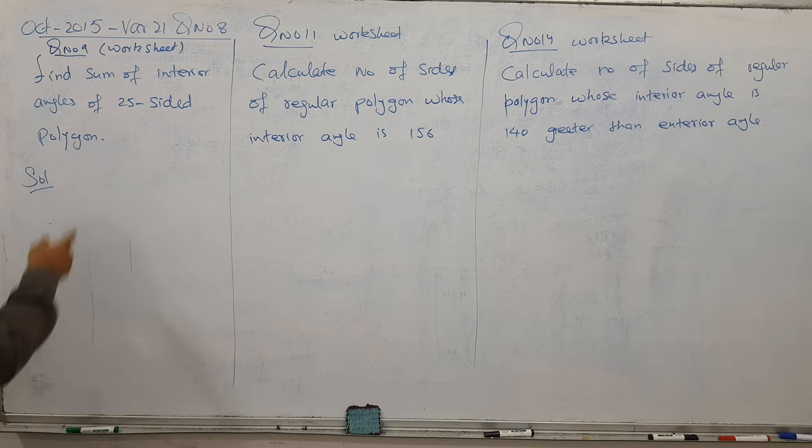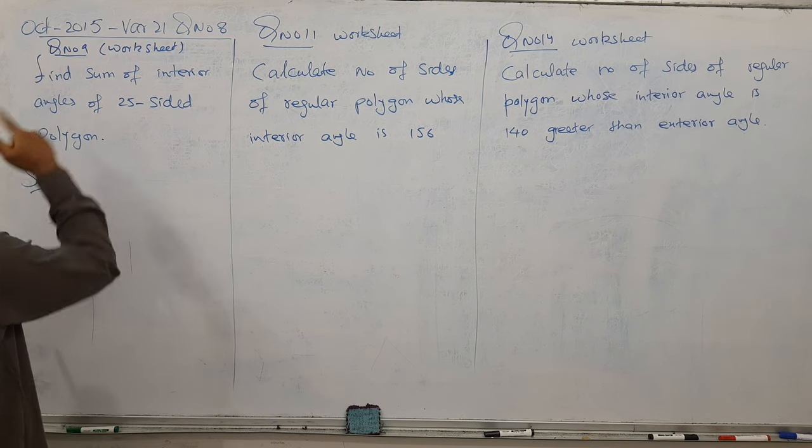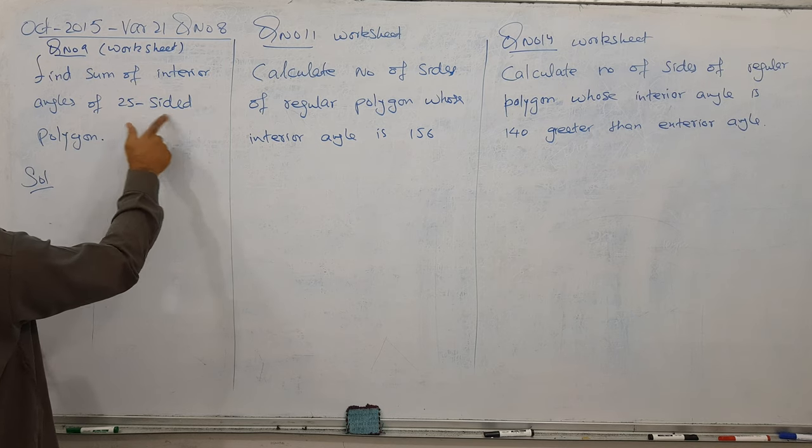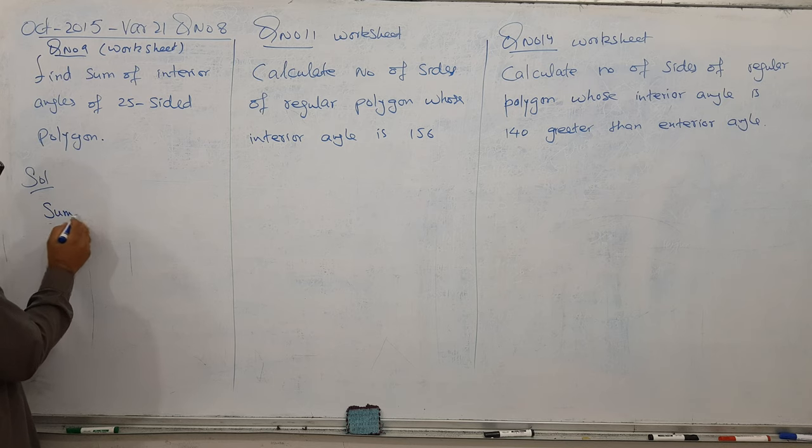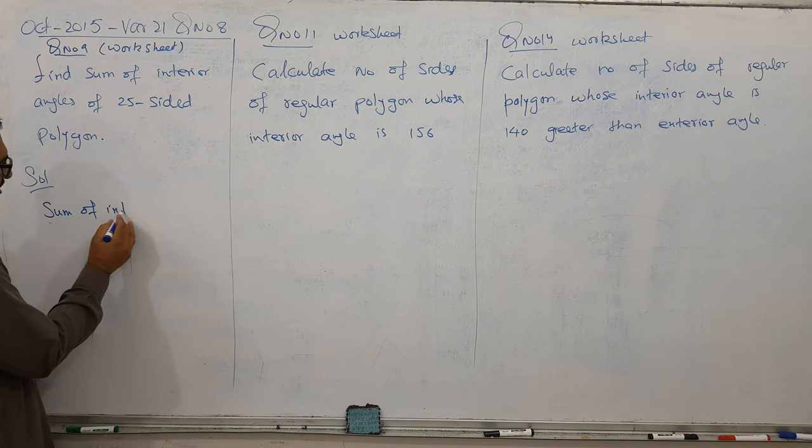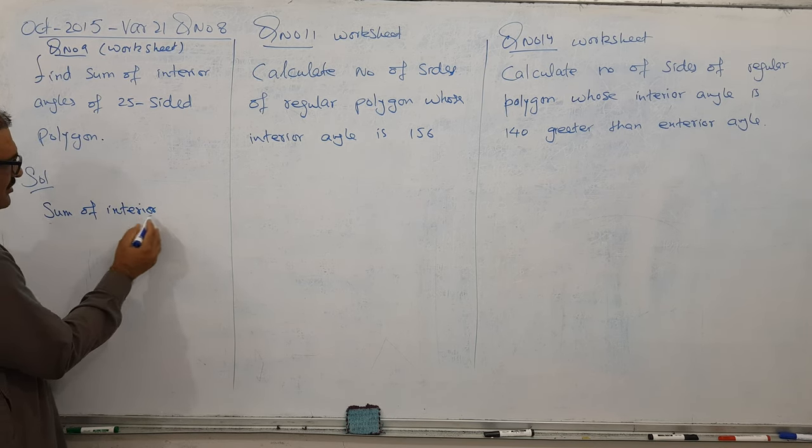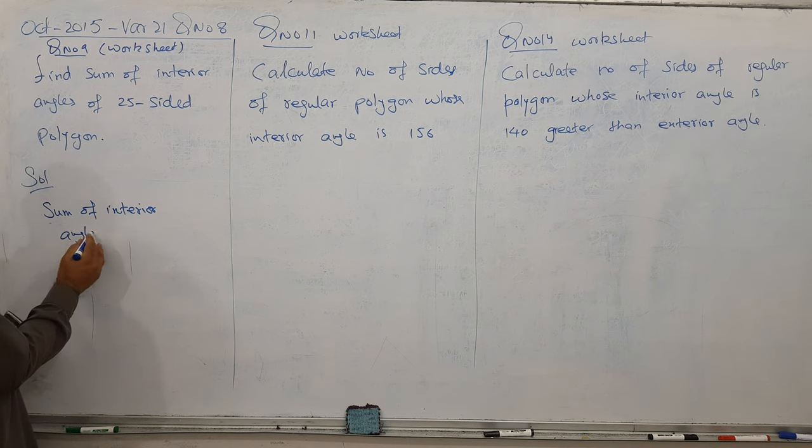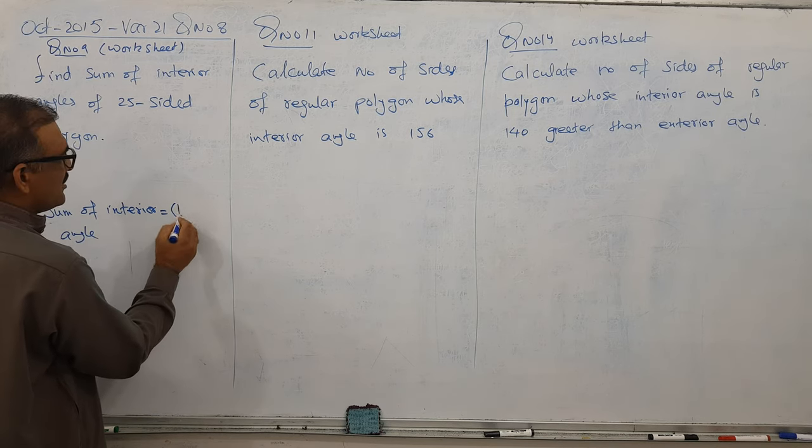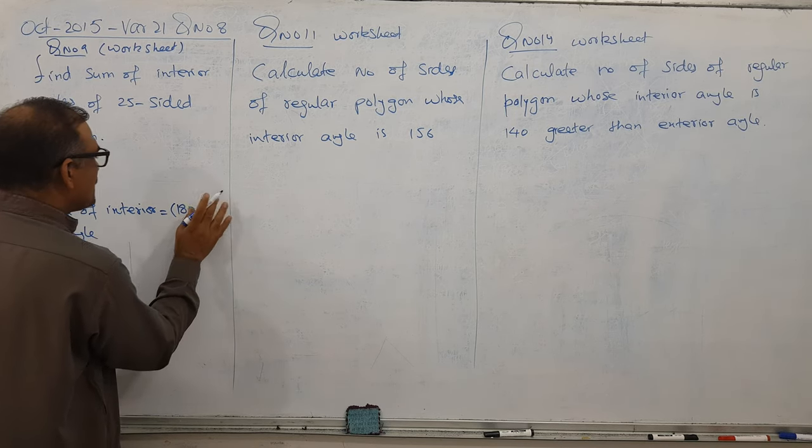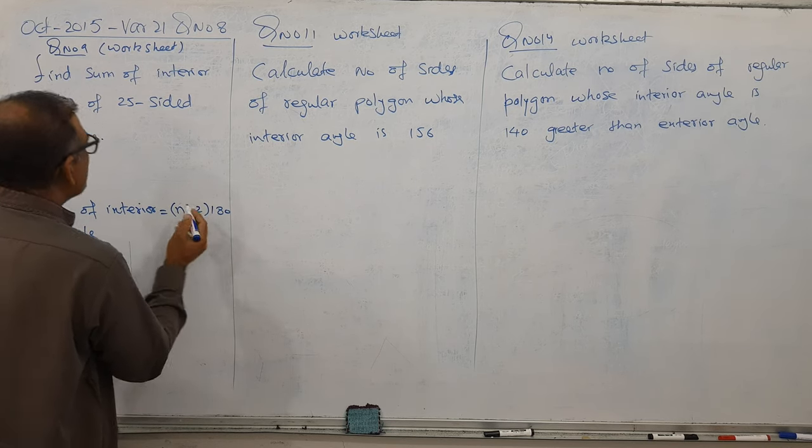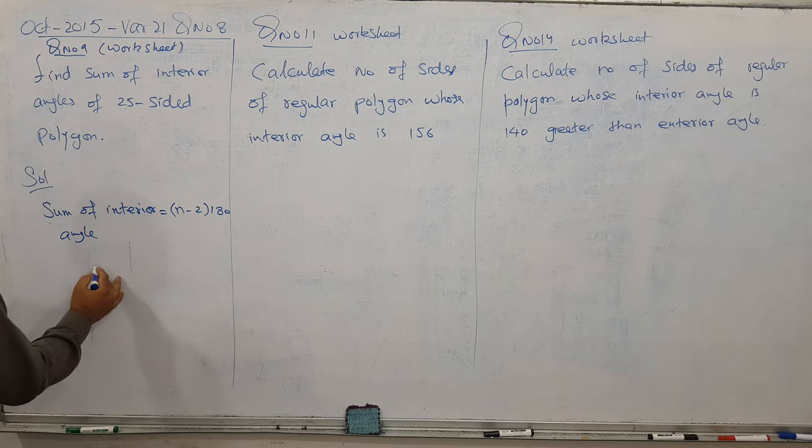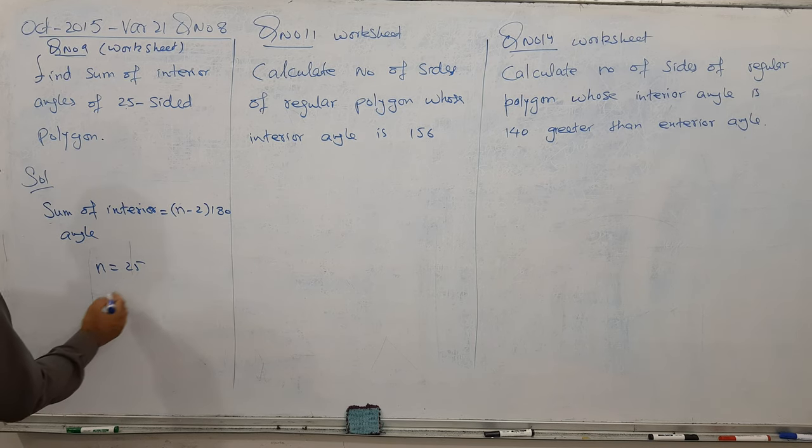The question asks: find the sum of interior angles of a 25-sided polygon. We have a formula - the sum of interior angles of any regular or irregular polygon is n minus 2 times 180. Because we have 25 sides, simply replace n equal to 25.